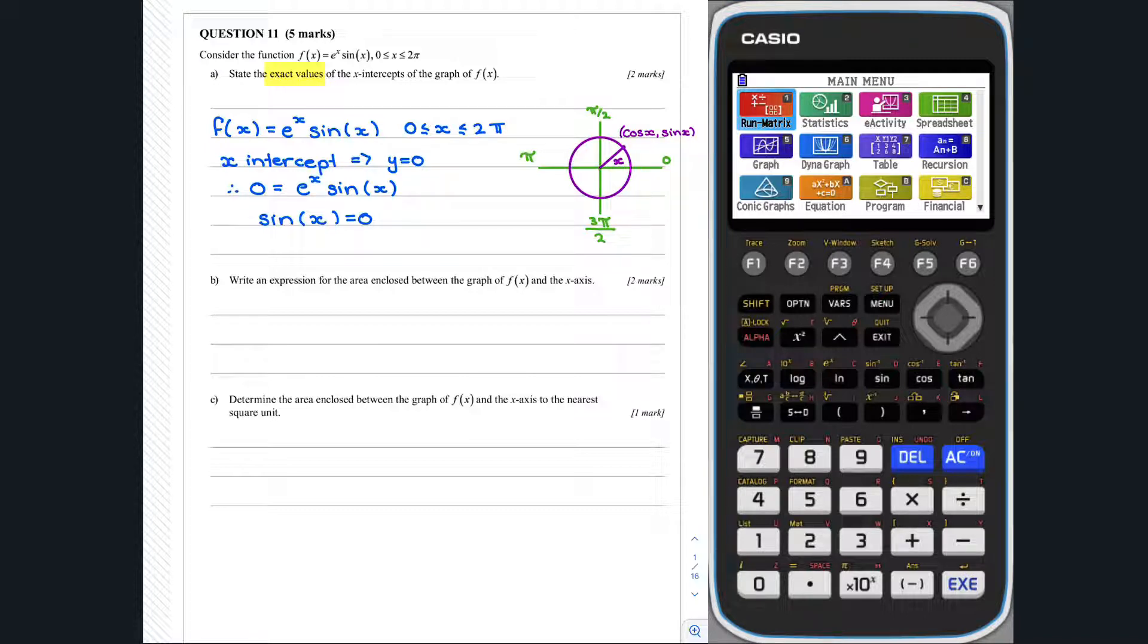So, sine x equals 0 when x is equal to k pi, where k is an integer. However, we are told the domain for f of x is between 0 and 2 pi inclusive. So, the x-intercepts of f of x are x equals 0, x equals pi, and x equals 2 pi.